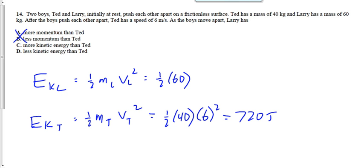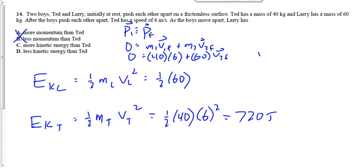How did you get 4 meters per second? So you said it's an explosion, right, basically, where you say the 0 is the initial momentum, equals M1 V1 F plus M2 V2 F. So we analyzed it the way we have been analyzing it. 0 is equal to 40 times 6 plus 60 times V2 F. And V2 F worked out to be 4. So then we said 4 squared. 4 squared is 16. 16 times 30 is 480.